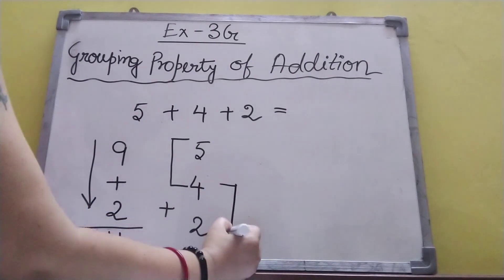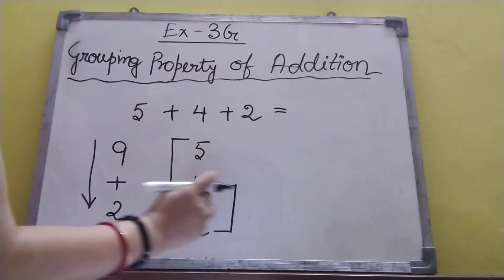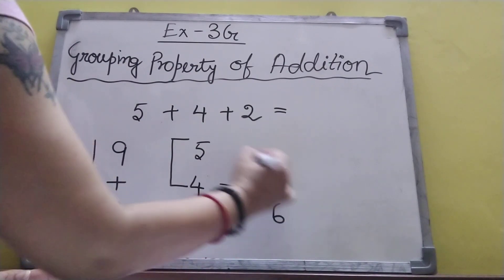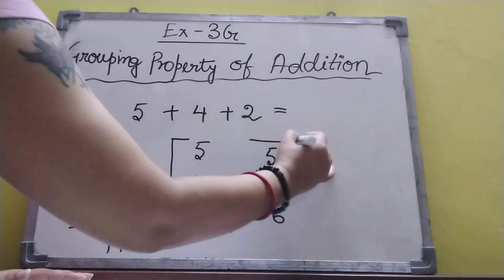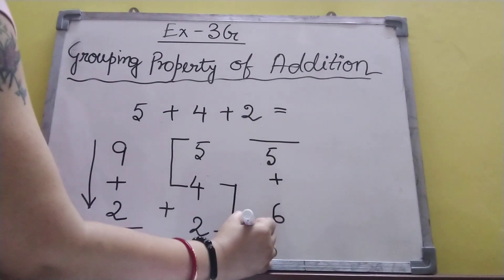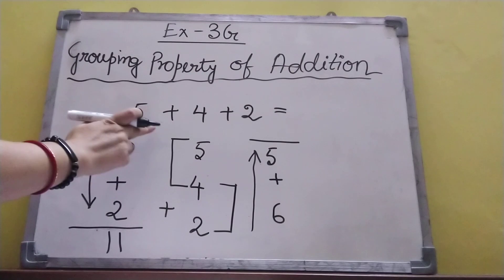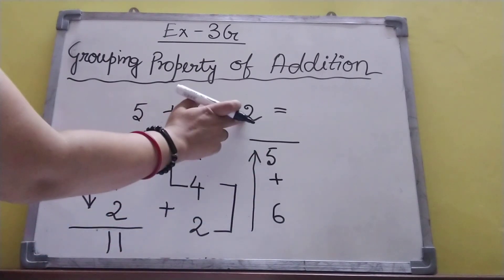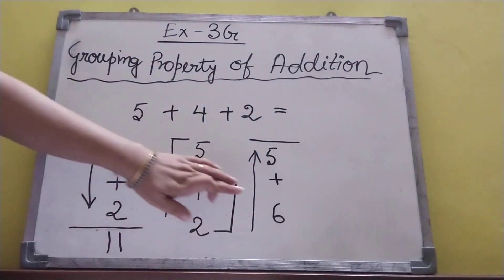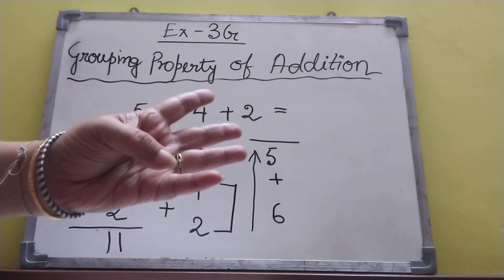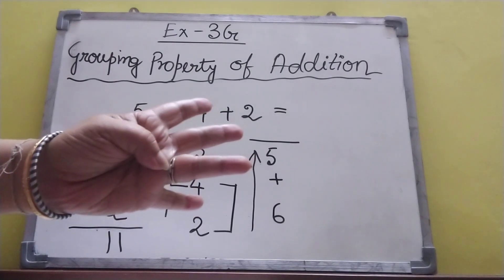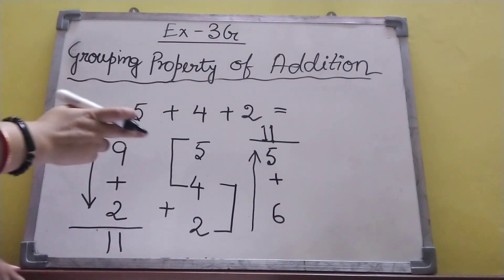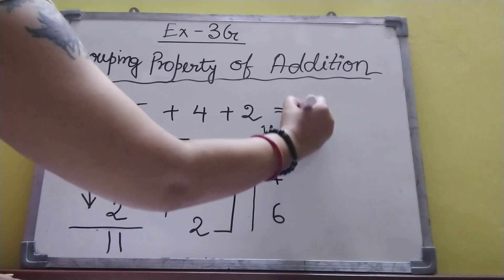Now we can make the other group first. We will add four plus two: four, five, six. Six here. Plus five — since we are going upward direction, I will write the answer on top. Six after six, five is here: six, seven, eight, nine, ten, eleven. Total answer is eleven.